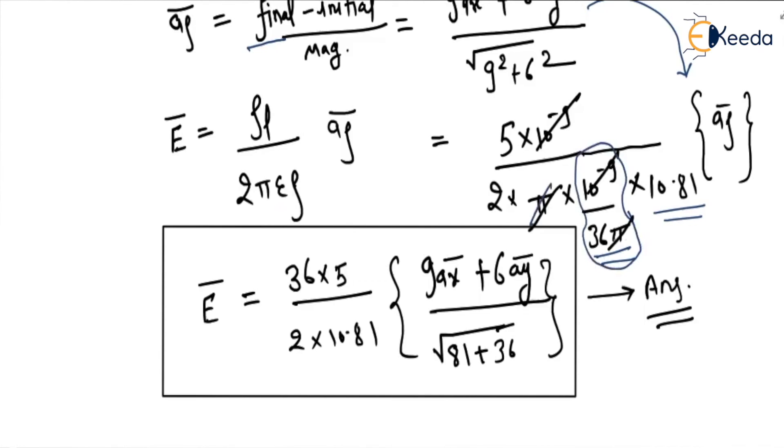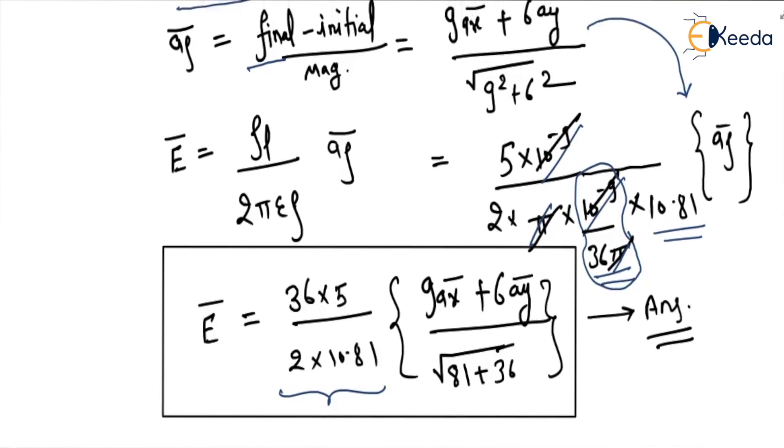This π and π will cancel. This 10^(-9) and this 10^(-9) will cancel. And 36 × 5 divided by 2 × 10.81.